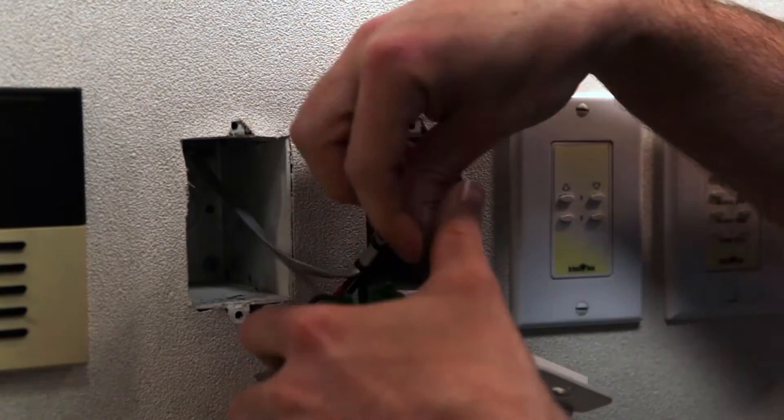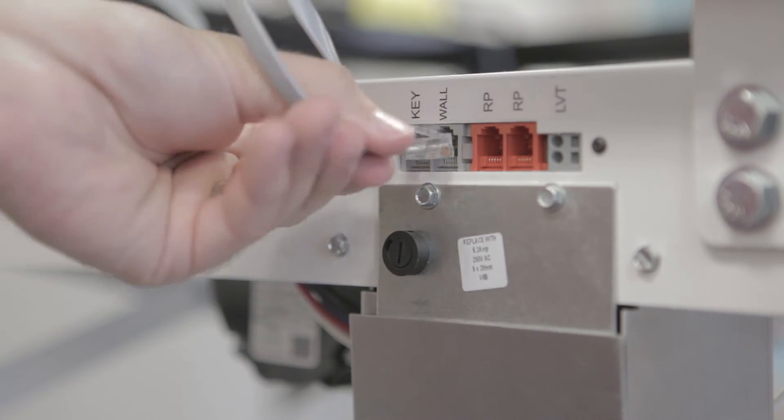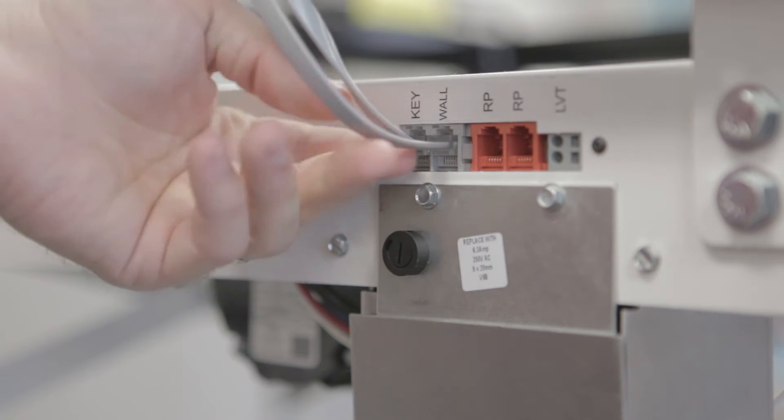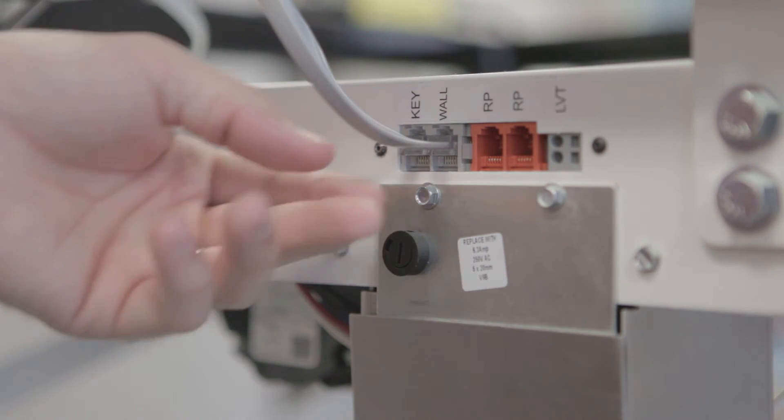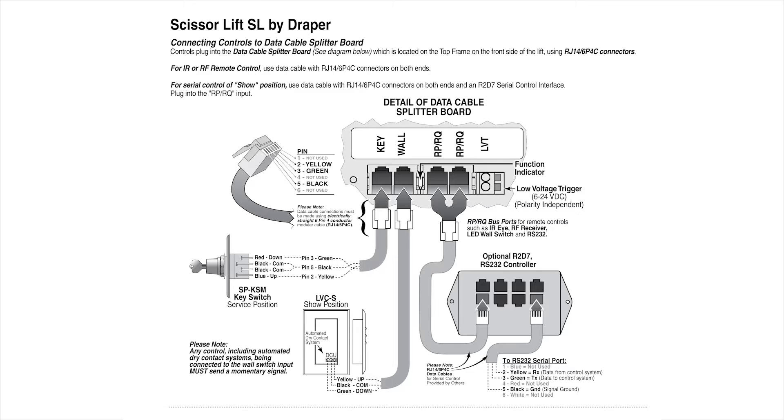Check the connection between the 3 button wall switch or the key switch and the supplied low voltage data cables. Check that the low voltage data cables are connected correctly to these switches. Review the proper up, down and common wire connections to the switches as shown in the installation instructions.